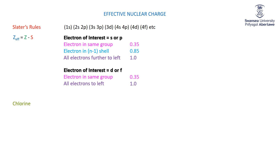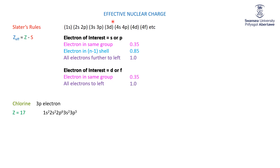Let's do a couple of examples. Consider a chlorine atom: Z = 17, so 17 protons in the nucleus and 17 electrons outside. The electron configuration is 1s², 2s², 2p⁶, 3s², 3p⁵. None of those electrons feel the full effect of the 17+ nucleus. As we get further away, they're shielded more and more. We're going to calculate the shielding constant, and thus the effective nuclear charge, for one of those five 3p electrons. So let's rewrite the electron configuration as Slater suggests.